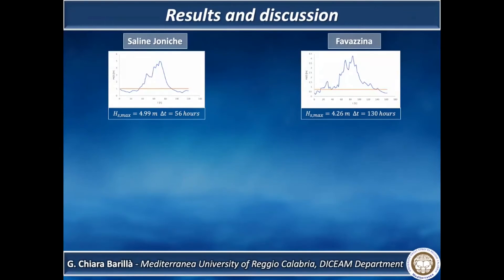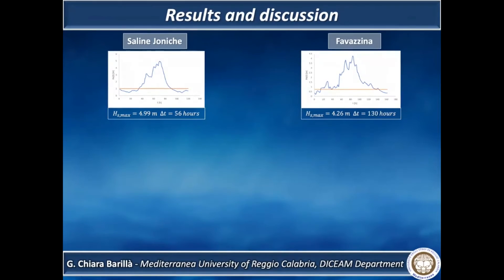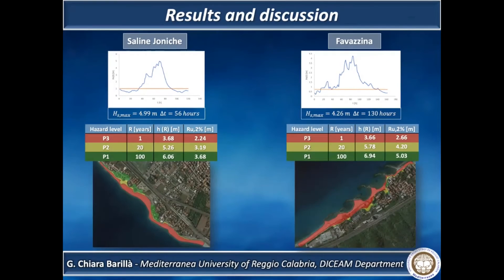This slide shows the results obtained; in particular, the storms occurred were reconstructed. The back-analysis model that obtained the most concurrent results is that of Stockdon et al. The tables show the significant wave height and the run-up values for three hazard levels, defined by the return periods of 1, 20, and 100 years. Therefore, the hazard maps have been plotted.